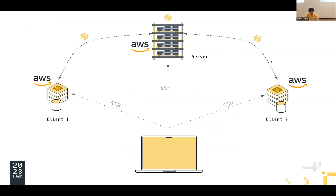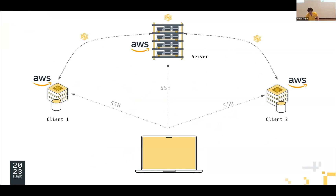To do that, I will actually set up three machines using AWS. Two of them will act as clients and one as server, and I will then connect through SSH to the different machines.